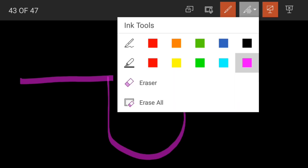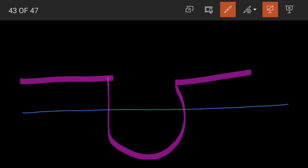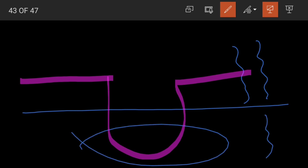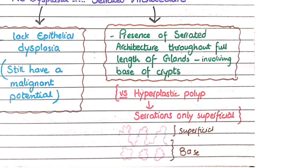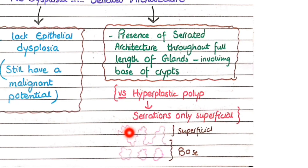To explain with a diagram: the colon's epithelium forms surface epithelium that invaginates deep into the lamina propria to form crypts. In hyperplastic polyps, serrations are only in the superficial layers. In sessile serrated adenomas, serrations extend not only to the superficial layer but also deep into the base of crypts and the glands, throughout the full length of the epithelium.